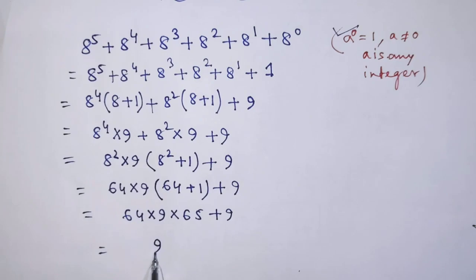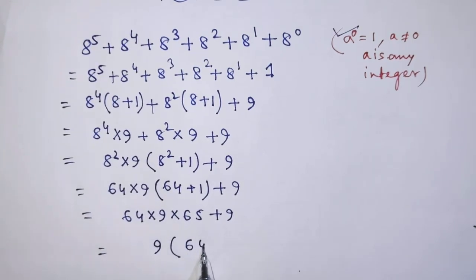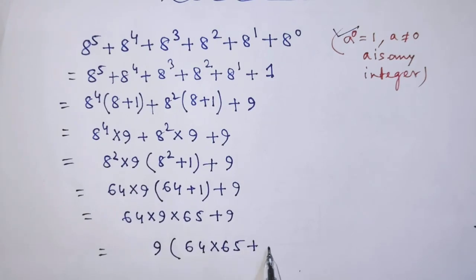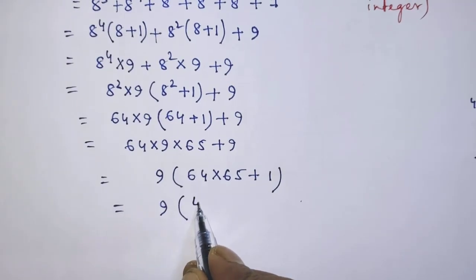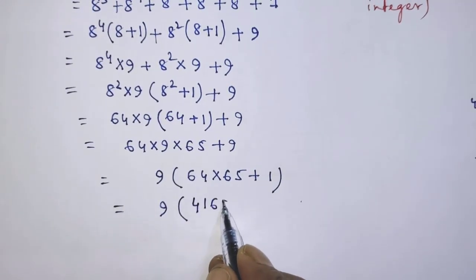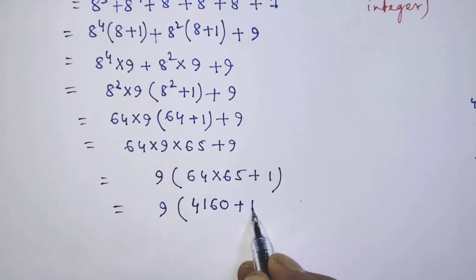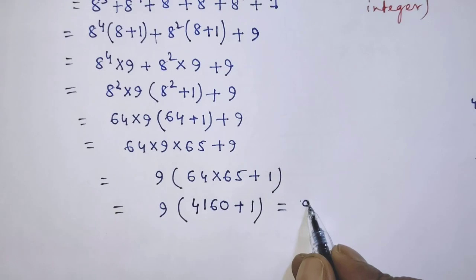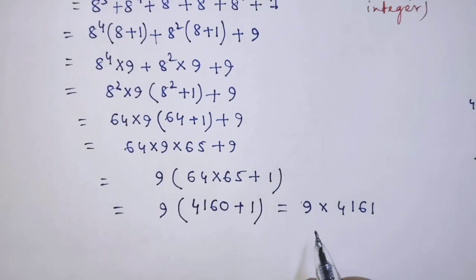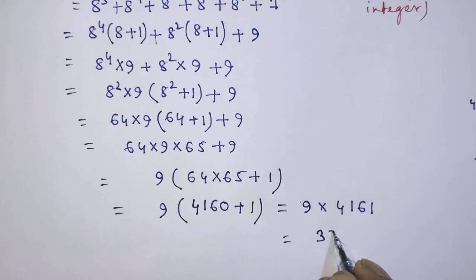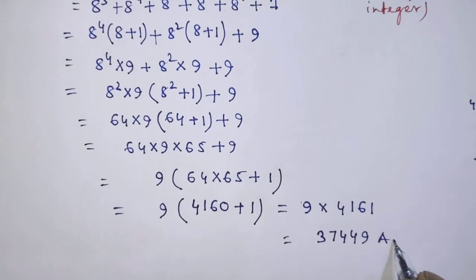The common factor of these two terms is 9, so we write: 9 times (64 times 65 plus 1), which is 9 times (4,160 plus 1), giving us 9 times 4,161. Multiplying these numbers by 9 gives us 37,449. This is our final answer.